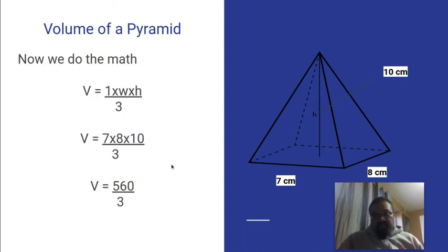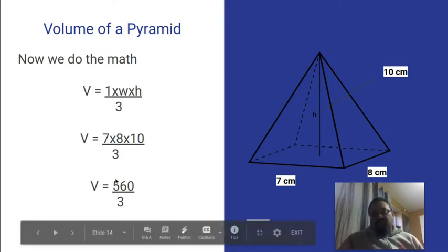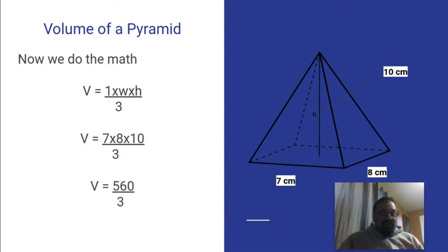7 times 8 is 56. 56 times 10, which is the adding of a zero, is 560. 560 divided by 3 actually doesn't come out evenly without a decimal.